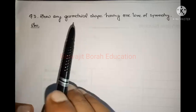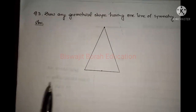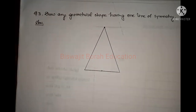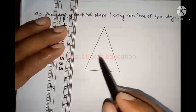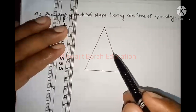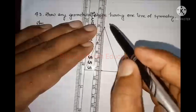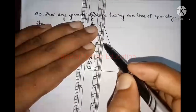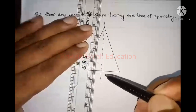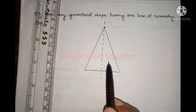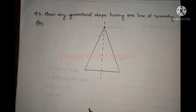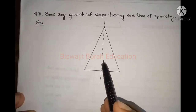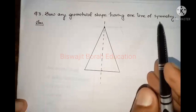If we draw an isosceles triangle — an isosceles triangle is one where two sides are equal, and an isosceles triangle has only one line of symmetry. We can draw a line of symmetry here; this line divides the triangle into two equal parts. We cannot draw lines of symmetry in any other direction. So this is the geometrical shape which has only one line of symmetry.